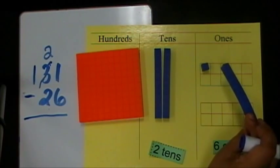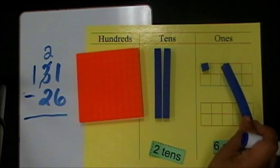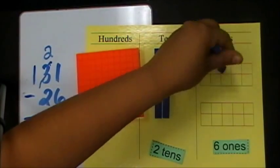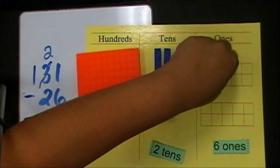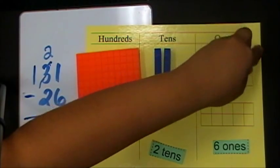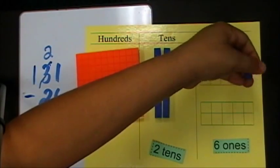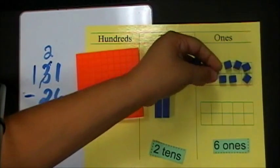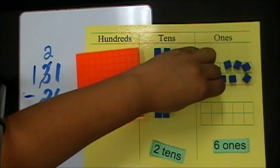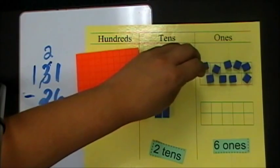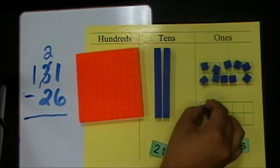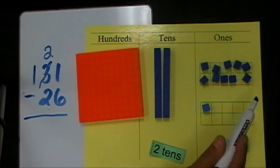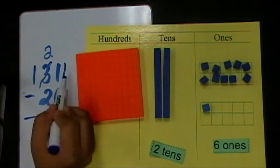And so I need to put this 1 ten over here. So I have to break it apart. I just go ahead and fill them in. I'm not really counting. I'm only putting in the 10 ones that made up the 1 ten. Put a 1 by my side. Because I have 10 and 1 is 11.